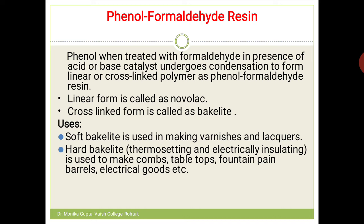Phenol and formaldehyde can be condensed in the presence of acid or base. You can make either a linear polymer or a branched polymer. If you make a linear polymer, its name is Novolac; if you make a branched polymer, that is Bakelite.